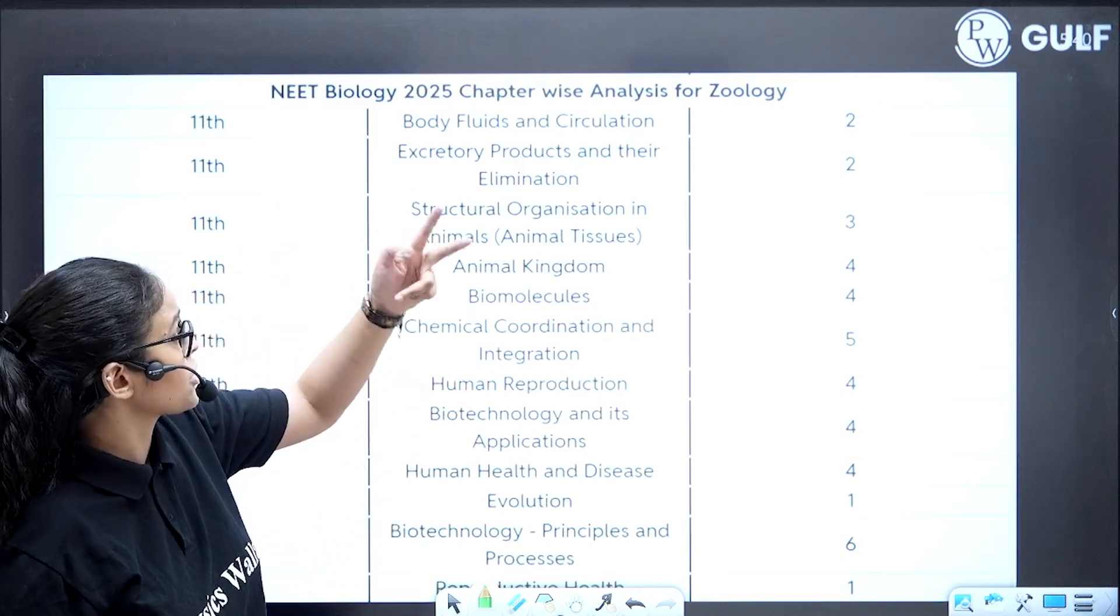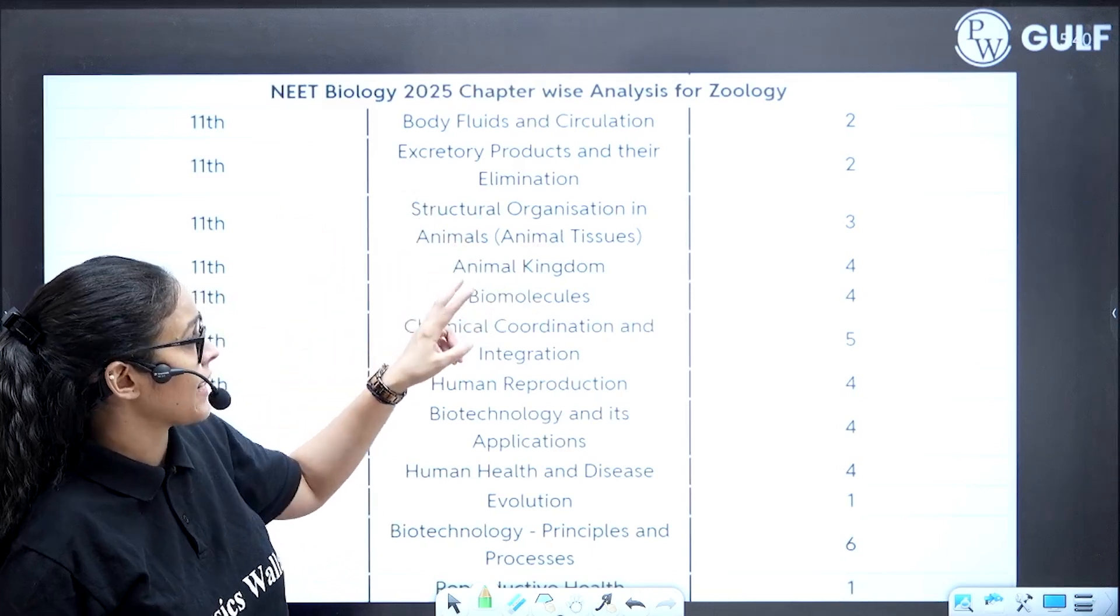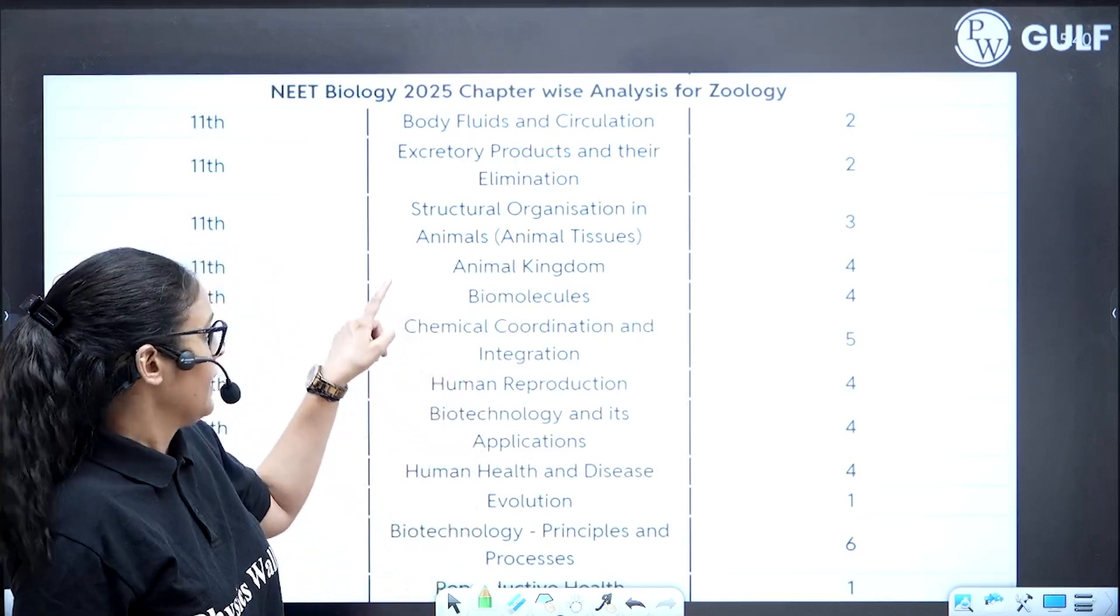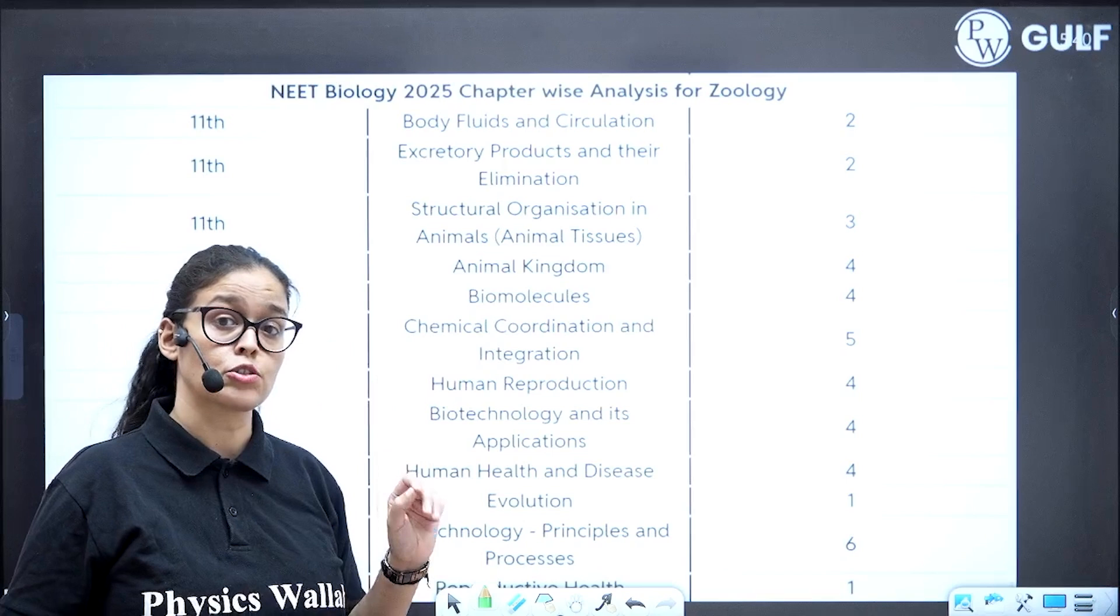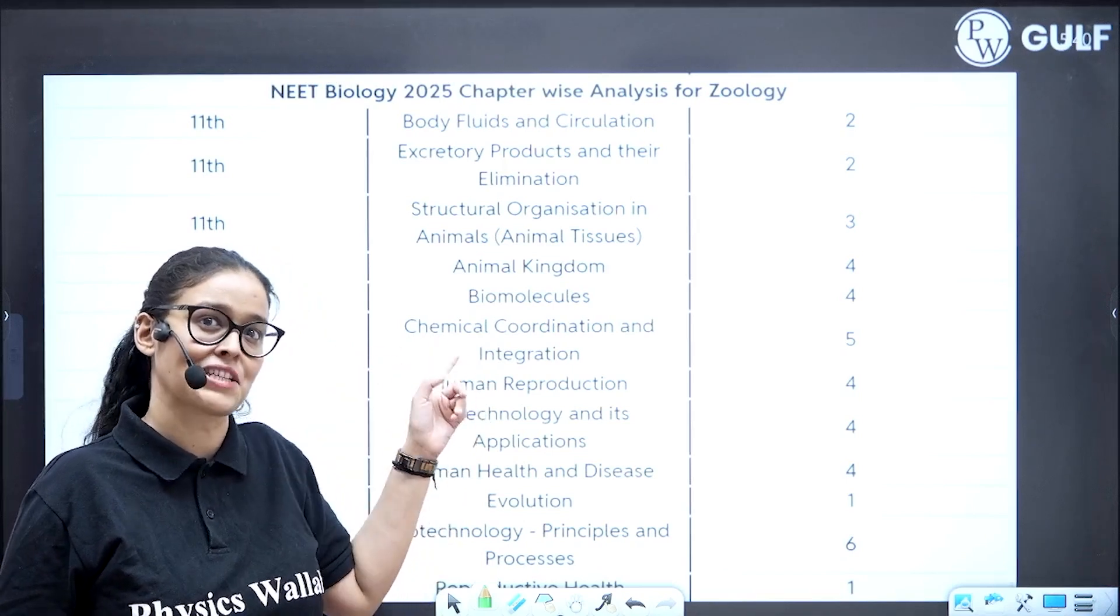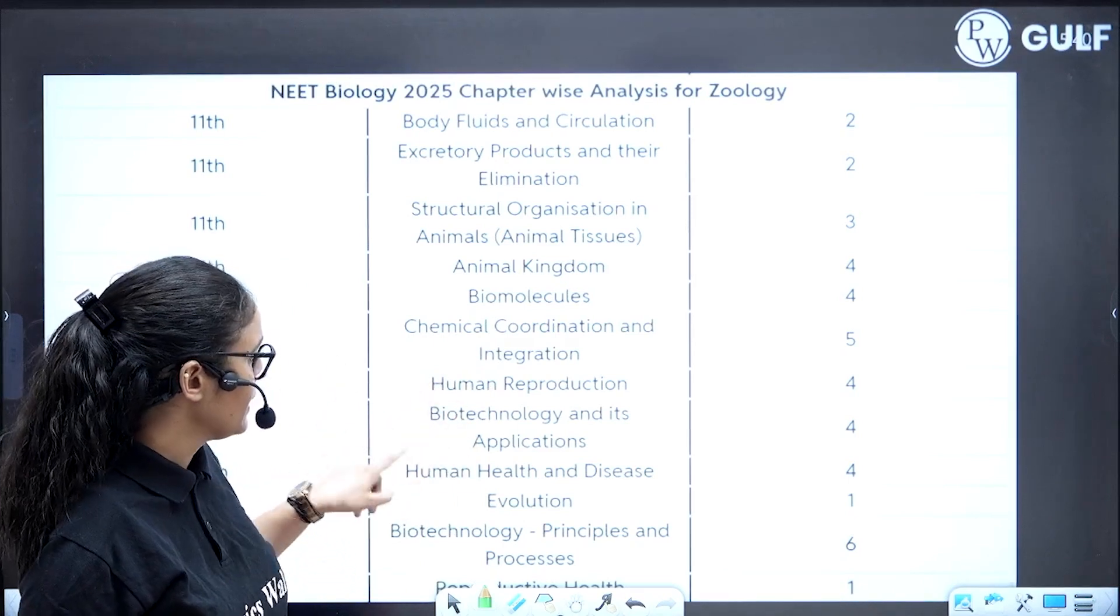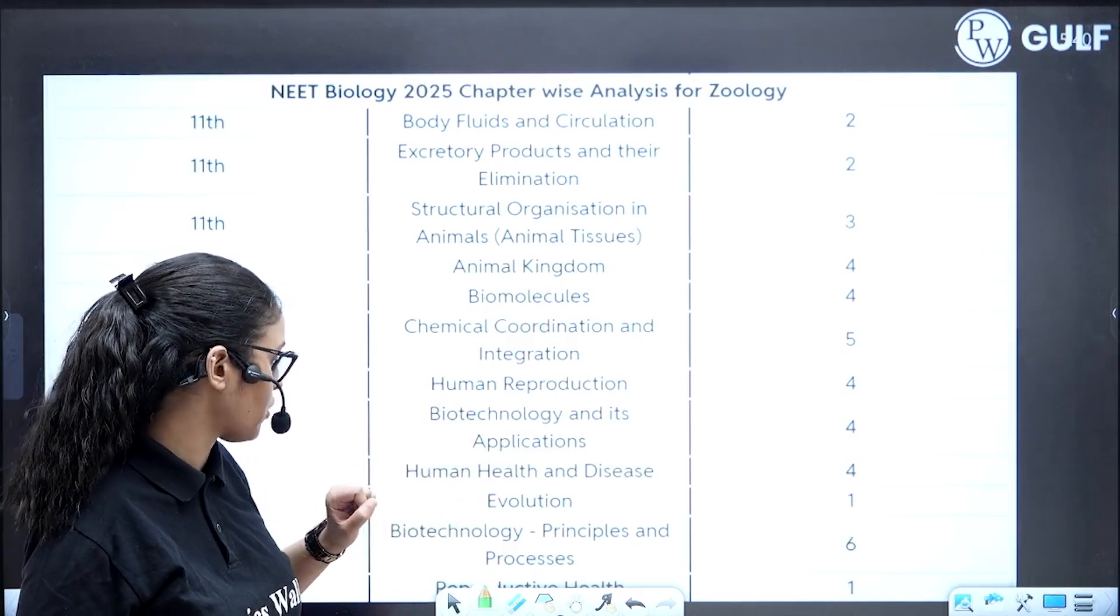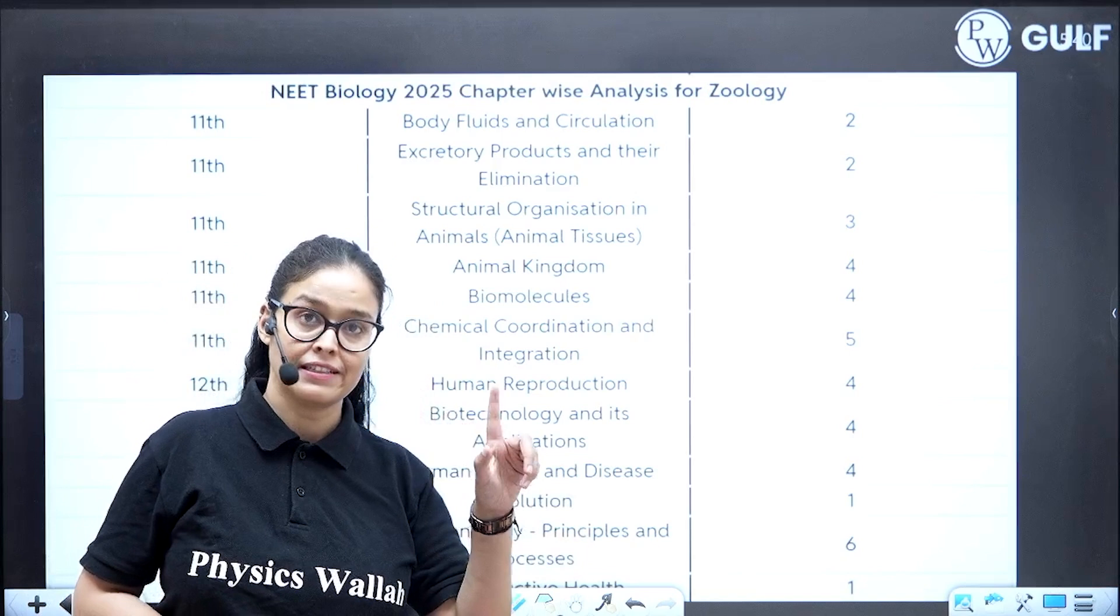Zoology portion: body fluid circulation two questions, excretion two questions, structural organization from the frog three questions, so you cannot leave frog. Animal kingdom four questions, molecular biomolecules four questions, chemical control and coordination small chapter five questions. This time they increased questions from this chapter. Human reproduction four, biotechnology application four, health and disease four, evolution one, biotechnology principles and processes six, human health and disease one, reproductive health one.